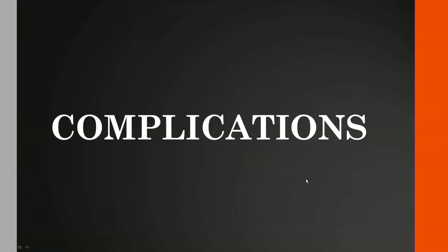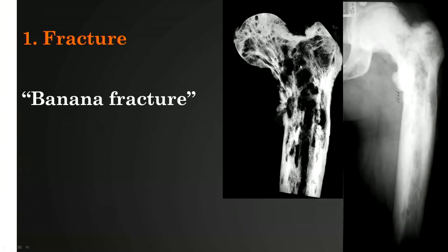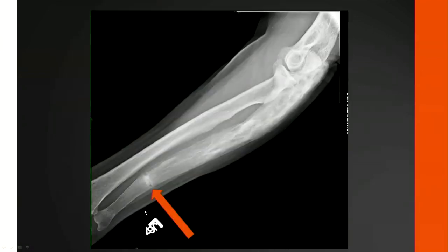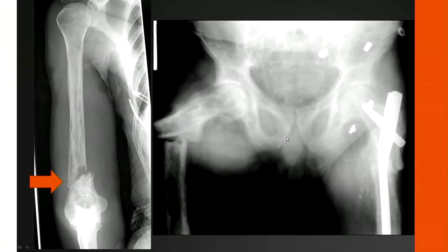The complications of Paget's disease include weakened bone causing fractures—known as the banana fracture, shown here as a fracture of the proximal femur. There are bowing deformities due to bone turnover and remodeling, which create stresses along the convex margin of the long bone and can result in stress fractures seen as horizontal lucencies with surrounding sclerosis—ranging from non-displaced to more displaced and very displaced fractures.